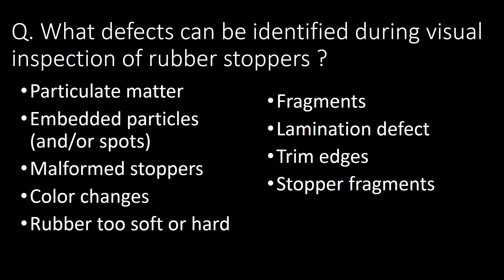What defects can be identified during visual inspection of rubber stoppers? Nine major defects can be identified: first, particulate matter; second, embedded particles; third, malformed stoppers; fourth, color changes; fifth, rubber too soft or too hard; sixth, fragments; seventh, lamination defect; eighth, flash marks; and ninth, stopper fragments.